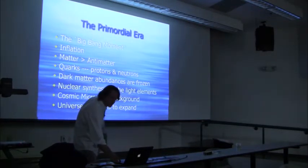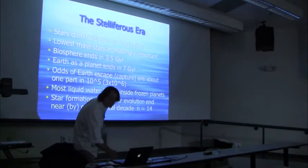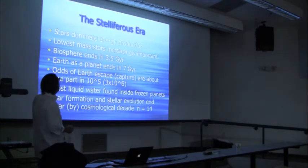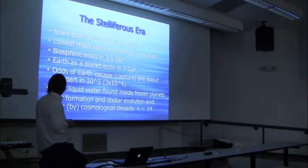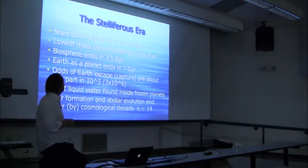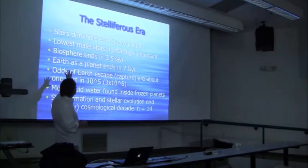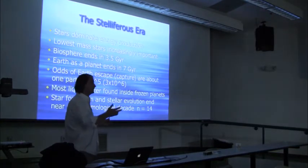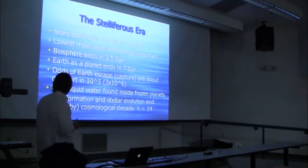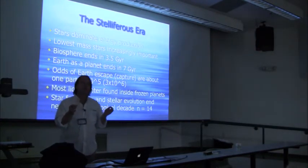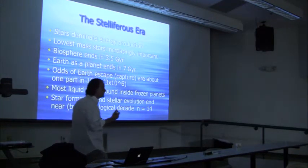This era continued until the universe was old enough to produce stars. We're right in the middle of the stelliferous era now, with stars dominating energy production. Low-mass stars become increasingly important as the universe ages. Our biosphere will end about three and a half billion years from now — that's the longest we have. The Earth will probably be swallowed by the sun in about seven billion years. The odds of Earth escaping during that window are about one in 10 to the 5, and one in 3 million for capture — remarkable that we can calculate these with confidence. We also argued that most liquid water environments will be found inside frozen planets. Star formation and stellar evolution both end at about the same time, with characteristic lifetimes measured in tens of trillions of years.